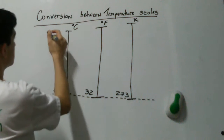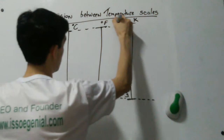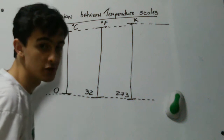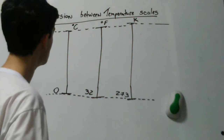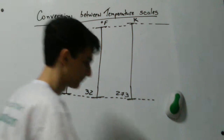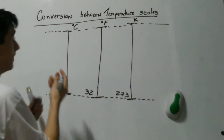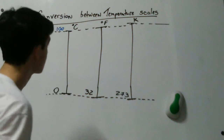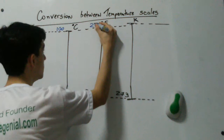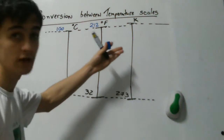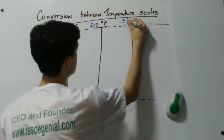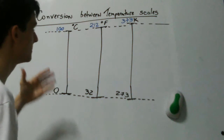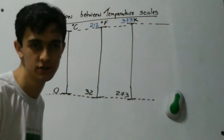This second temperature on the top represents the same temperature for all scales — the temperature at which water boils, the steam point. In the Celsius scale this number was called 100 degrees Celsius. In the Fahrenheit scale this number was called 212 degrees Fahrenheit. And in the Kelvin scale this number was called 373 Kelvin. These numbers are what the people who created each scale chose to assign to those temperatures.